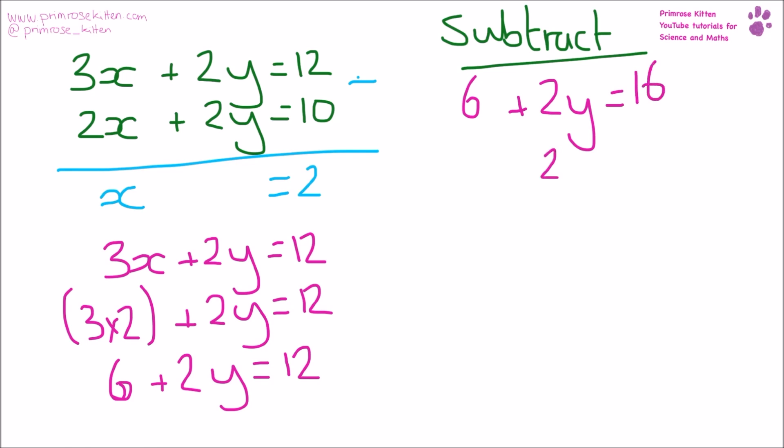So now we can say that 2y equals 12 minus 6. So 2y equals 6. Y equals 6 over 2. So y equals 3.